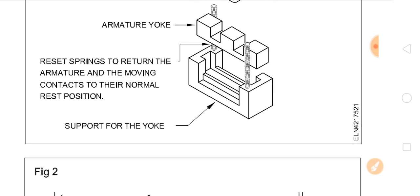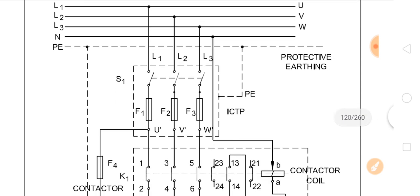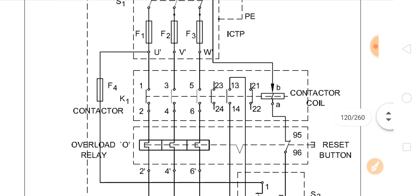Component labels include: support for the yoke; L1, L2, L3 — Line 1, Line 2, Line 3; and U, V, W motor terminals. L1, L2, L3 supply input; S1; F1, F2, F3 fuses; ICTP — iron-clad triple pole switch; contactor K1; overload relay; terminals 1, 2, 3, 4, 5, 6, 13, 14, 23, 24, 21, 22; contactor coils B and A; reset button 95 and 96; S2 and S3 push button station.